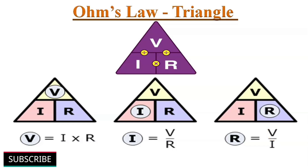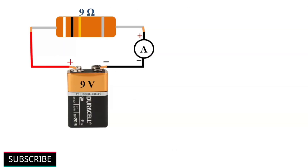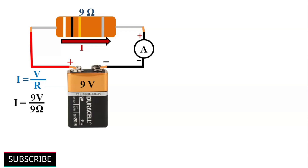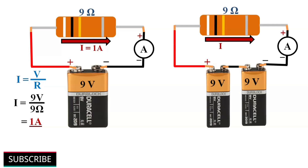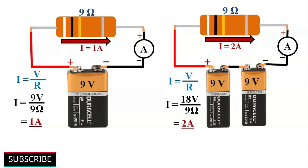Now we will discuss Ohm's law using a practical method. Suppose a 9-volt battery is connected across a 9-ohm resistor. The current I flowing through the resistor is determined using Ohm's law: I equals V divided by R, which equals 9 volts divided by 9 ohms — that equals 1 ampere. We can measure current by connecting an ammeter in series with the circuit. If we double the voltage to 18 volts, the current also doubles to 2 amperes.